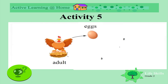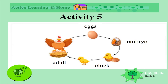Let's find out more about chickens. Adult chickens - the mummy hens - lay eggs. The embryo begins to grow inside the egg, and this grows into a little chick. The chick hatches and grows up to be an adult.